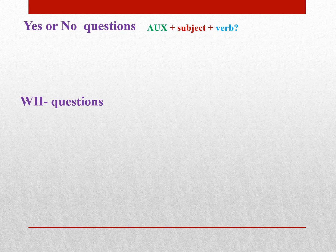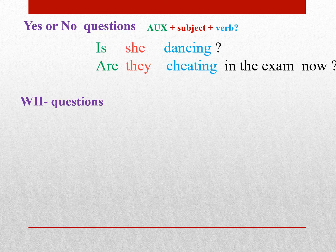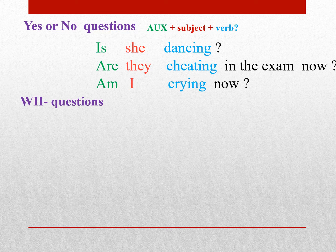Subject مشخصه، فعل هم توی Present Continuous با مدل ing یا همون Gerund Verb. برای همین شما میگید: Is she dancing؟ یعنی فلانی الان داره میرقصه؟ Are they cheating in the exam now؟ اونا الان دارن تو امتحان تقلب میکنن؟ Am I crying now؟ من الان دارم گریه میکنم. اینها مدل Yes/No question هستن.